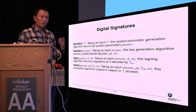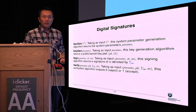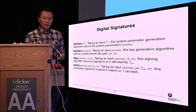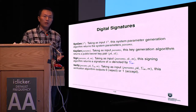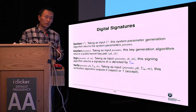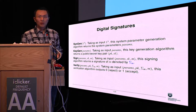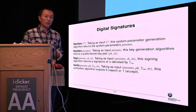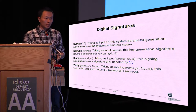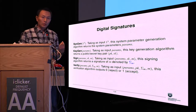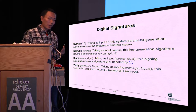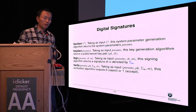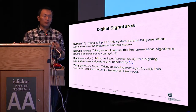Let me quickly revisit the signature definition and its model. A signature scheme is composed of four algorithms in our definition: system parameter generation, key generation, signing, and verification algorithms. In this work, we use the notation sigma(M) to denote a signature on message M.